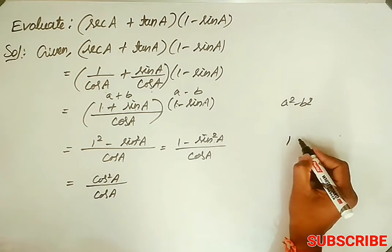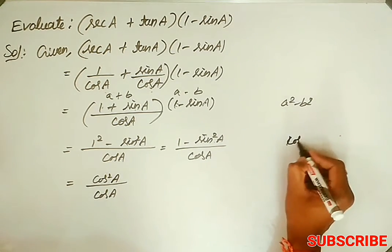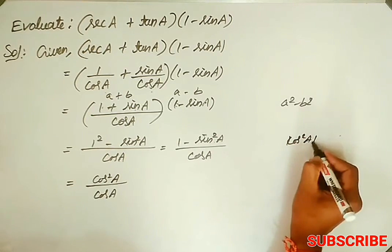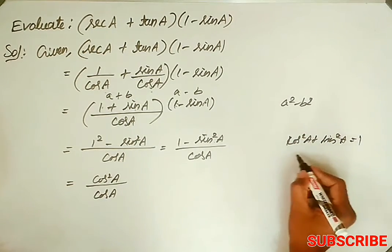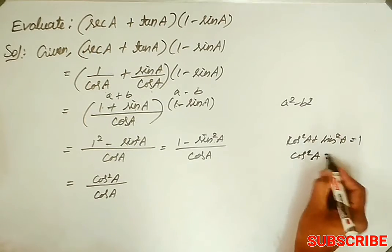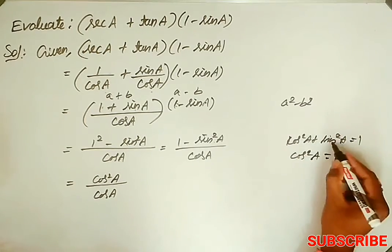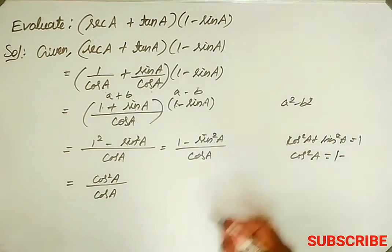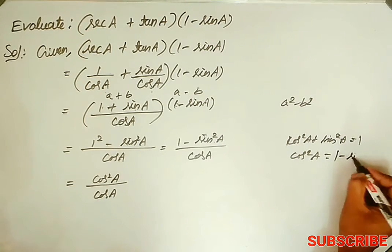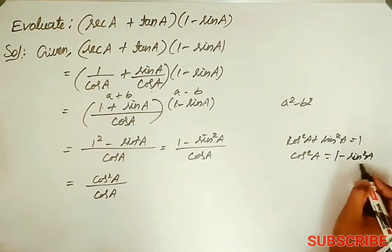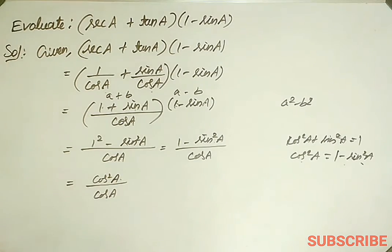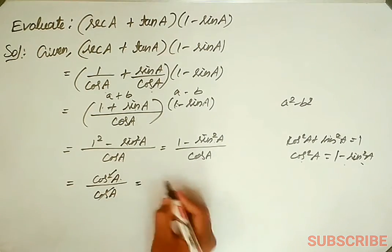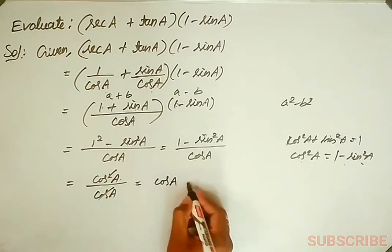This uses the first identity: cos squared a plus sin squared a equals 1, so cos squared a equals 1 minus sin squared a. So 1 minus sin squared a is nothing but cos squared a. Substituting, cos squared a over cos a — the cos square and cos a cancel — equals cos a.